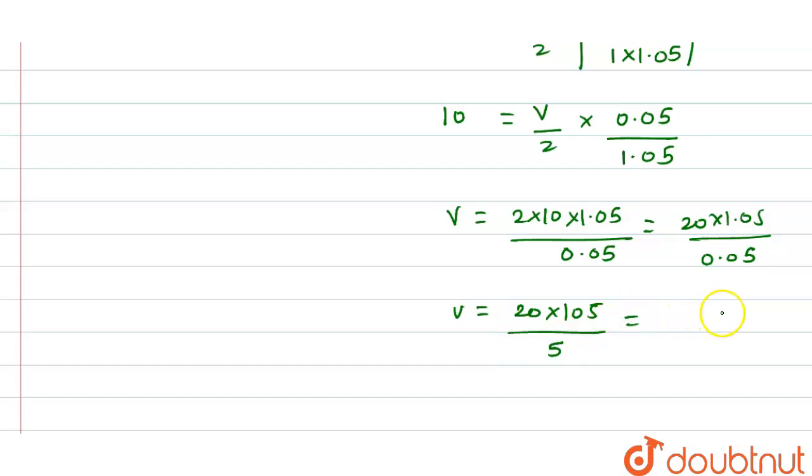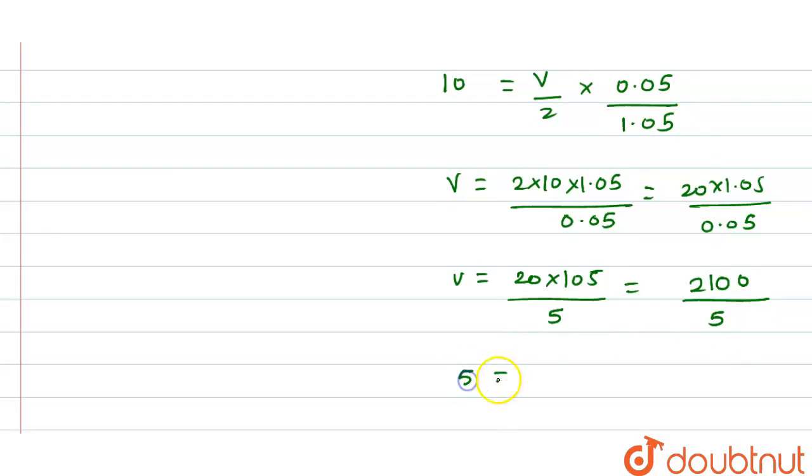So 20 into 1.05... 2100 divided by 5 will be equal to 420. Sorry here, the value of velocity of the transverse wave - if we divide by 5 it will be 425 meter per second.